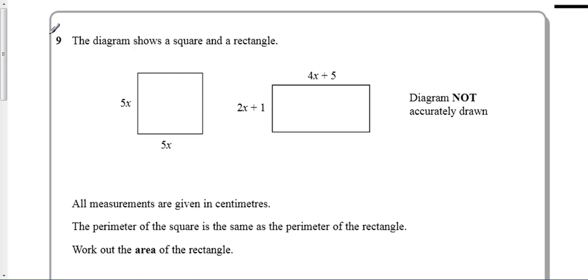Okay, question 9 on the higher paper—on the foundation paper this is question 23. There's a square and a rectangle. The perimeter of the square is the same as the perimeter of the rectangle. We need to work out the area. First, let's use the perimeter.